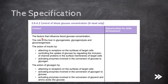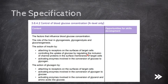First of all, we need to know the factors that influence blood glucose concentration. Then we need to know the role of the liver in glycogenesis, glycogenolysis and gluconeogenesis. Then we need to know the action of insulin by attaching to receptors on the surfaces of target cells, controlling the uptake of glucose by regulating the inclusion of channel proteins in the surface membranes of target cells, and activating enzymes involved in the conversion of glucose to glycogen.